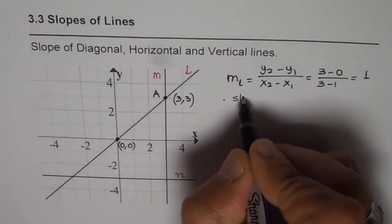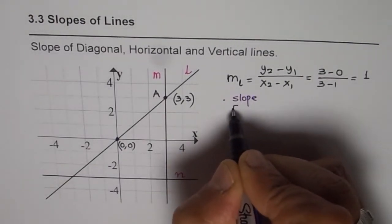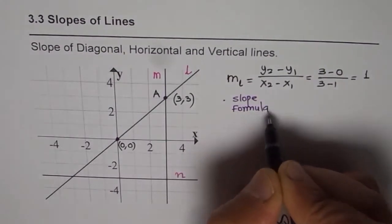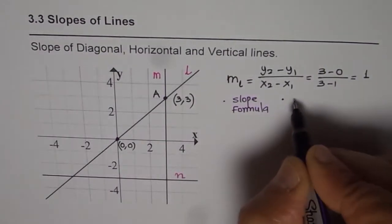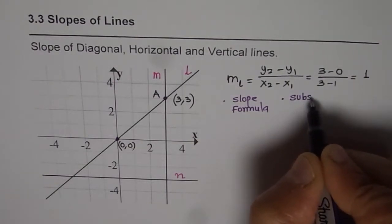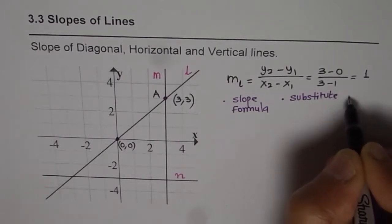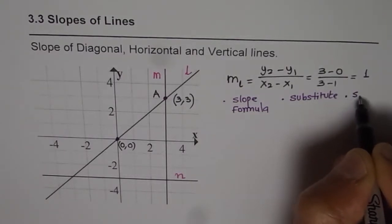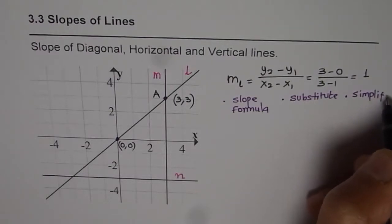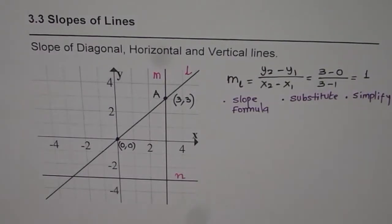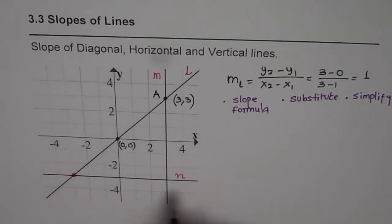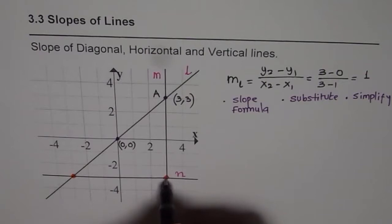Remember the steps involved: first, write the slope formula — you have to give reasons for each statement. Second, substitute the values. And third, simplify. When you follow these three steps, you get your slope. Now let's repeat these steps and find the slope of the next line. Let me take the horizontal line first, and I'll use these two particular points.